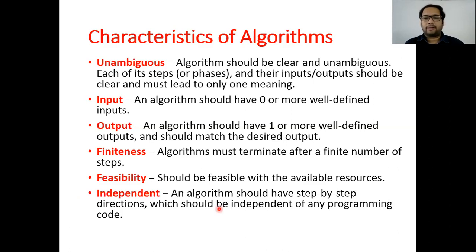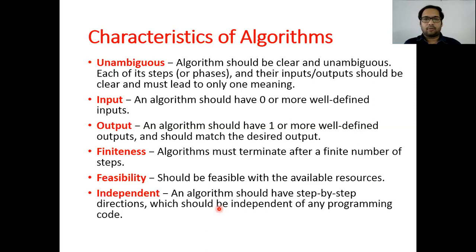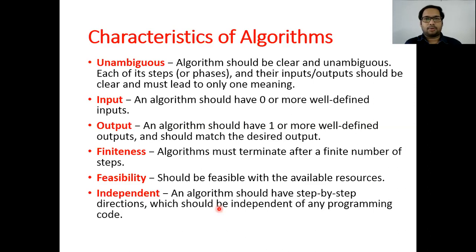The sixth characteristic is independent: the algorithm should have step-by-step directions which are independent of any programming code. While writing an algorithm, forget all programming languages and just focus on the process. After implementing the correct algorithm, then you think about which language to pick to implement it. If you put programming language-specific steps in the algorithm, then it should not be considered a proper algorithm. These are very important characteristics of an algorithm.